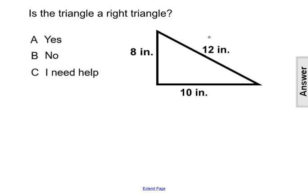In this case, the longest side is 12, so that would be considered c. And a and b, our two shorter sides, are 8 and 10.